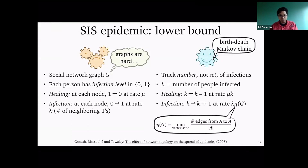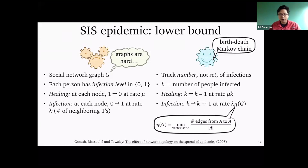Question: Is this minimum over vertex sets of size K, or for all vertex sets? Answer: Technically, the minimum is over vertex sets of size K where K is at most N over 2, where N is the total number of vertices. And it's not dynamic — this is a fixed constant for the graph. So that's the lower bound for the time it takes for the infection to die out.